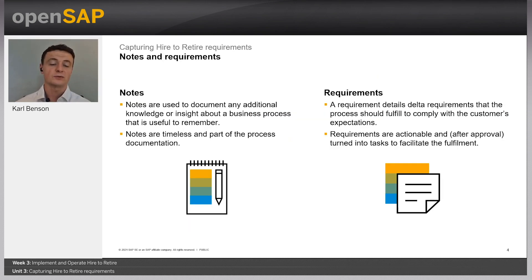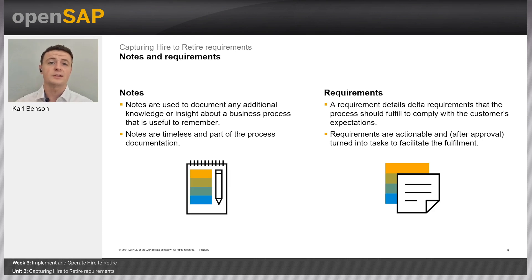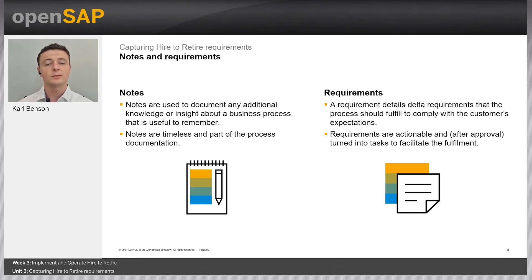As mentioned, we have notes and requirements in SAP Cloud ALM. Notes are used to document additional or useful information gathered from workshops about a particular process, but they are not actionable — we do not generate tasks from them. Requirements, on the other hand, detail the data requirements of the customer that the solution process should fulfill to fully comply with the customer's expectations. Requirements are fully actionable: after approval, we generate tasks from them to fulfill the customer's requirements.